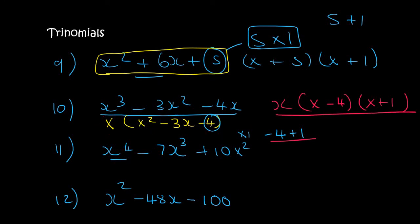With this one, this one's got 4 x's, this one's got 3 x's, and this one's got 2 x's. So we can take out x squared. Then we're left with x squared minus 7x plus 10. Now this is a trinomial.